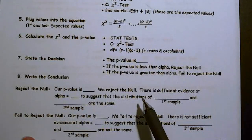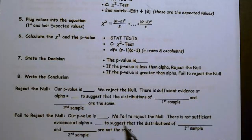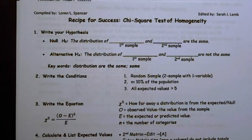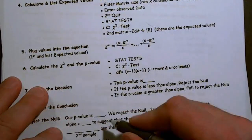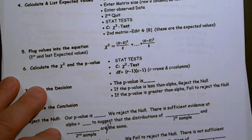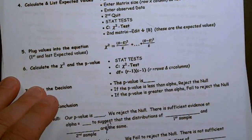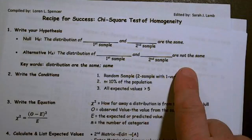There's sufficient evidence at alpha to suggest that the proportions, the distribution of the proportions of whatever it is, are the same or that they are not the same. By the way, this is a typo - are not the same, then are the same, because we're checking to see if they are not the same.